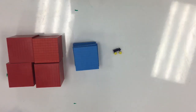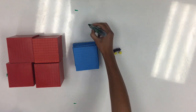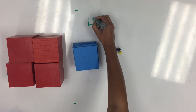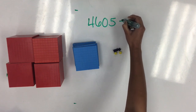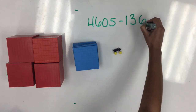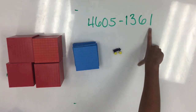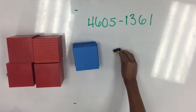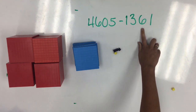Here, I'm going to show you an example of what to do if one of the digits in your number is a 0. I'm starting with 4,605 and I'm going to take away 1,361. Starting in the ones place, I can see that I can easily take away 1. Moving to the tens place, I notice I want to take away 6 tens.